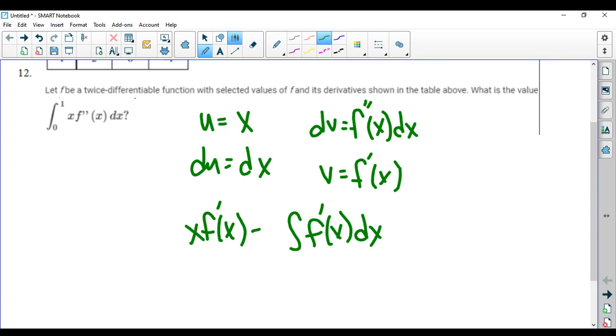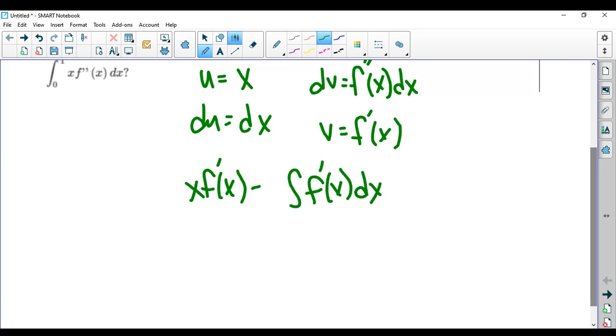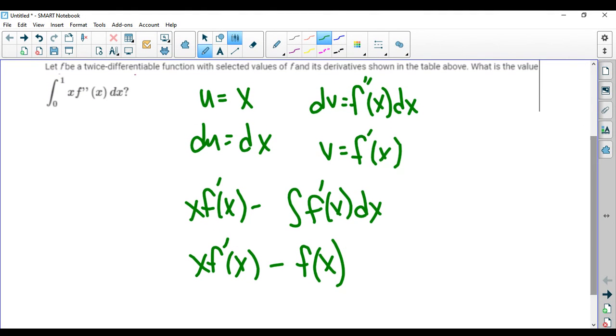So we still have to integrate, but now we have the integral of f prime. The integral of f prime is f of x plus c. We're not going to use the plus c because it's a definite integral. So we're just going to evaluate this function from 0 to 1.